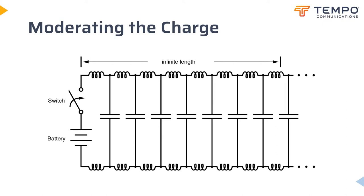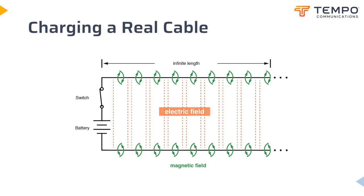This voltage drop limits the rate of change of voltage across the distributed capacitance of the cable, preventing the current from ever approaching an infinite magnitude. Because the electric charge carriers in the two conductors transfer energy to and from each other at nearly the speed of light, the wave front of voltage and current will propagate along the length of the cable at that same speed, resulting in the distributed capacitance progressively charging whilst the rate of this is moderated by the inductance.